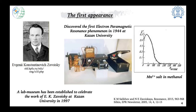As often happens with major discoveries, most people at the time didn't believe Zavoisky. He had to travel to Moscow and rebuild his instrument from scratch in front of other scientists to prove the phenomenon was real and not an instrument artifact. He was nominated for the Nobel Prize almost 17 times but unfortunately never received it. In 1997, a lab museum was established at Kazan University preserving all his instruments and work. There is also a nice article published in Resonance by the Indian Academy of Science describing his contributions.